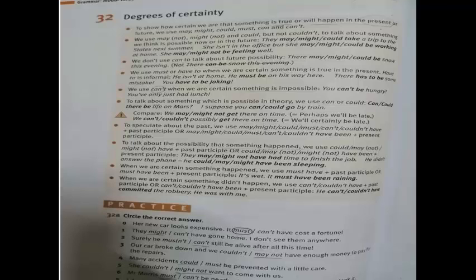Now let's move to degrees of certainty. To show how certain we are that something is true or will happen in the present or future, we use may, might, could, must, can, and can't. We use 'may', 'might', or 'could' to talk about something we think is possible now or in the future, for example 'they may, might, or could take a trip to the States next.' We don't use 'can' to talk about future possibility. We use 'must' or 'have to' when we are certain something is true in the present, for example 'he isn't at home — he must be on his way here.' We use 'can't' when we are certain something is impossible, for example 'you can't be hungry, you have only just had lunch.'